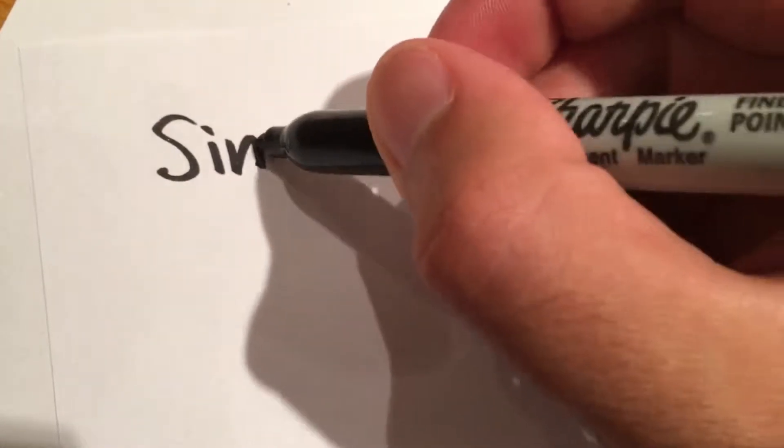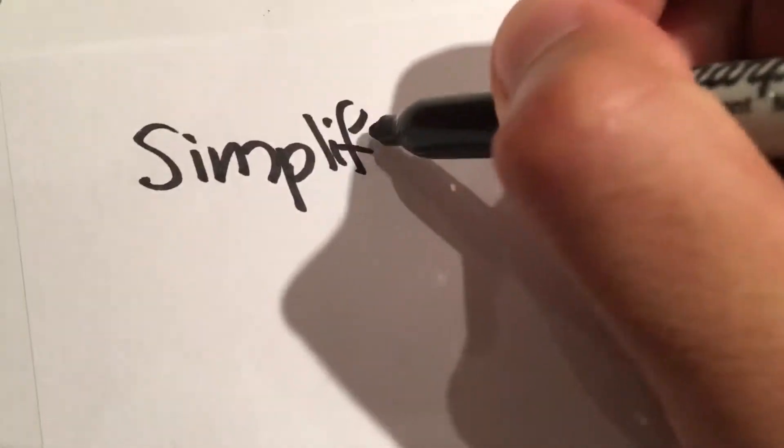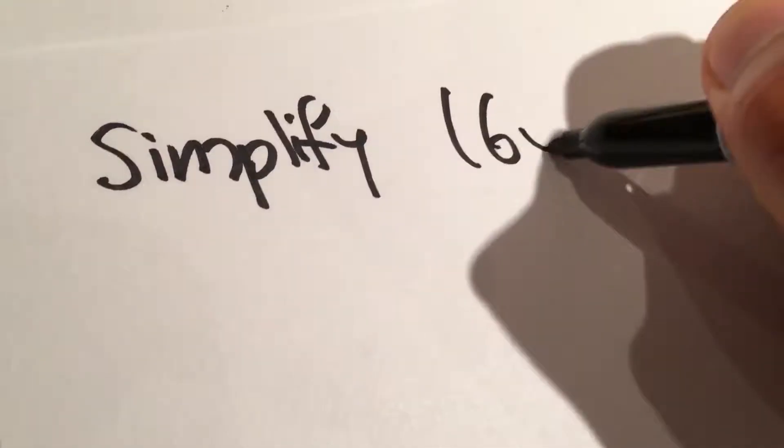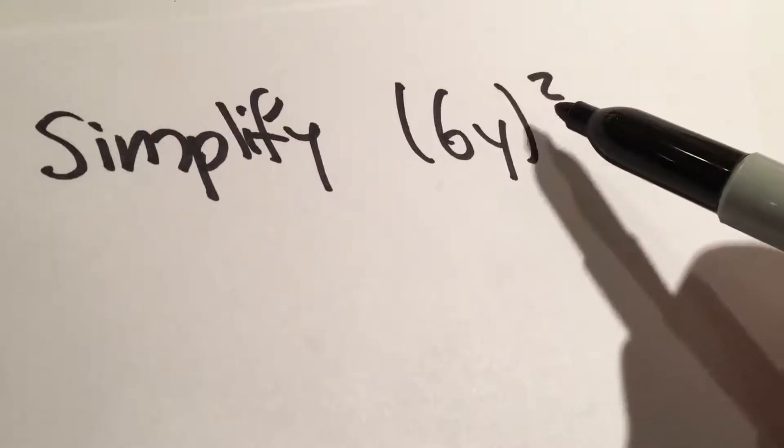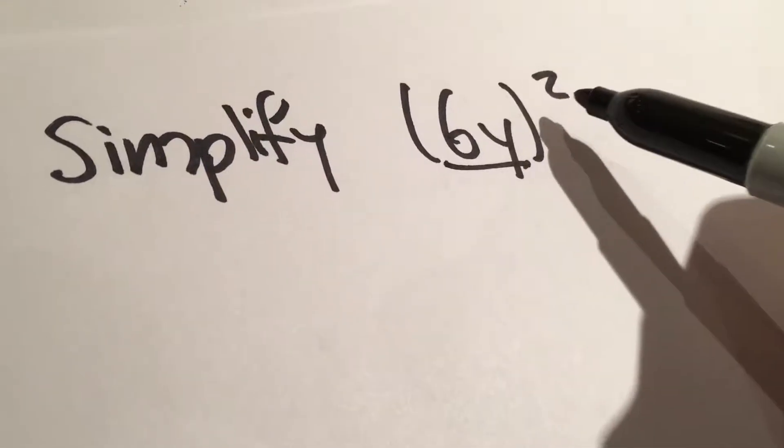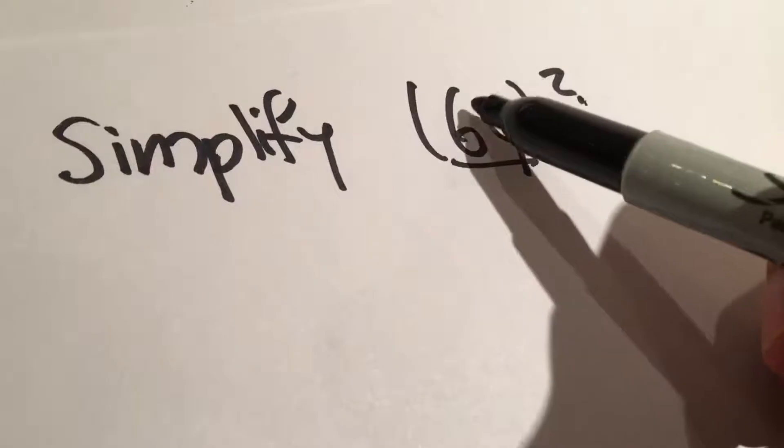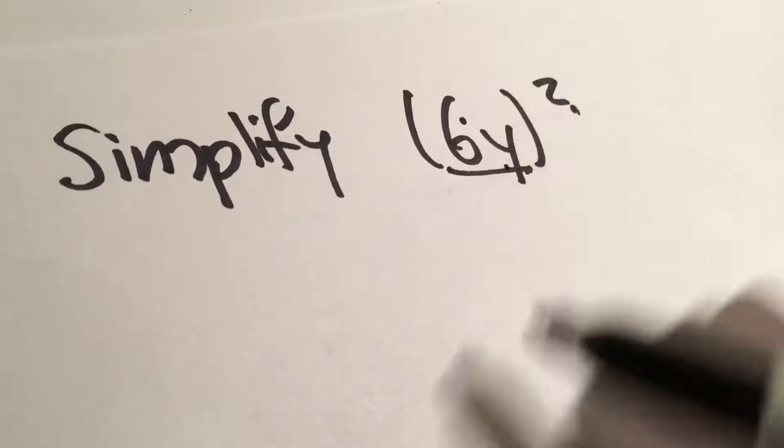Today we're going to simplify (6y)². Because this is one term here, we can just apply the square to this, the coefficient, and the variable.